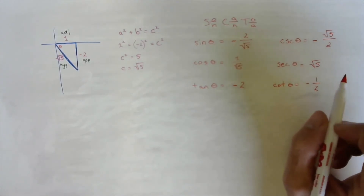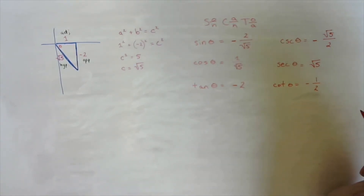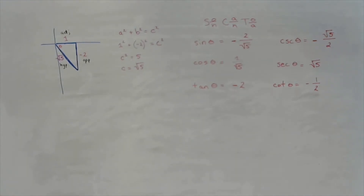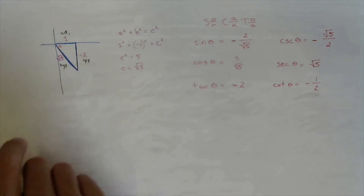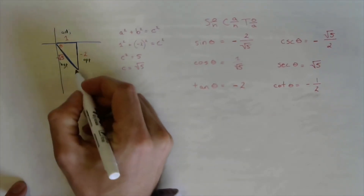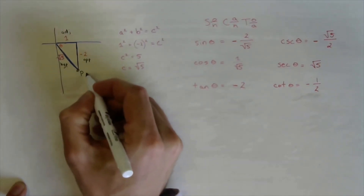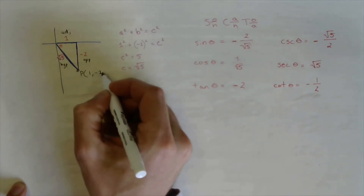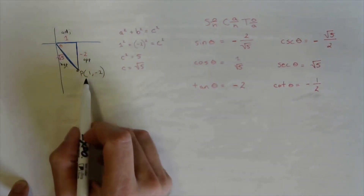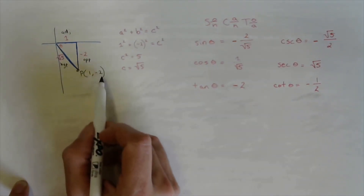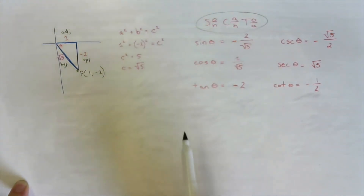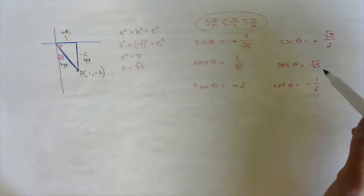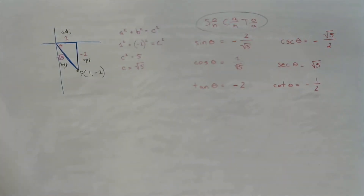There you have it — all six trig ratios. All we were given was point P at (1, −2). We used the x and y values to get the hypotenuse with the Pythagorean theorem, applied the primary trig ratios using SOHCAHTOA, and then took the reciprocals for the secondary trig ratios.